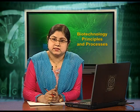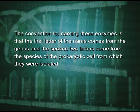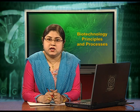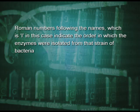The convention for naming these enzymes is that the first letter of the name comes from the genus and the next two letters come from the species of the prokaryotic cell from which they were isolated. For example, in EcoRI, 'Eco' comes from Escherichia coli RY13. The letter R is derived from the name of the strain. Roman numerals following the name — which is I in this case — indicate the order in which the enzymes were isolated from that strain of bacteria.